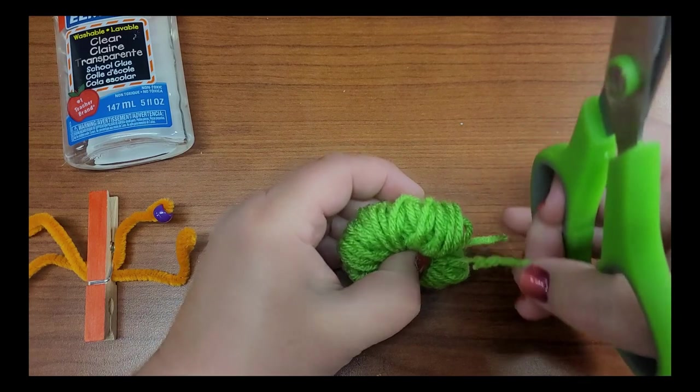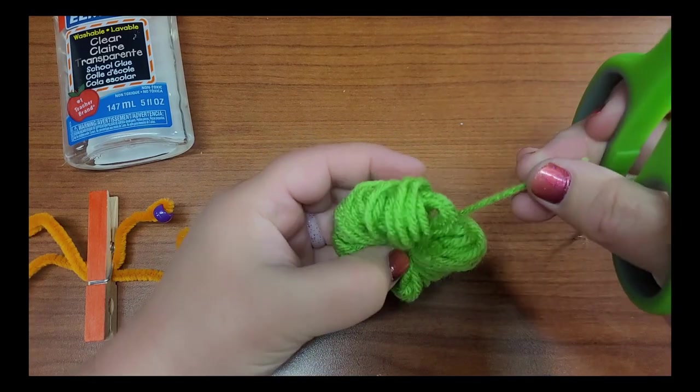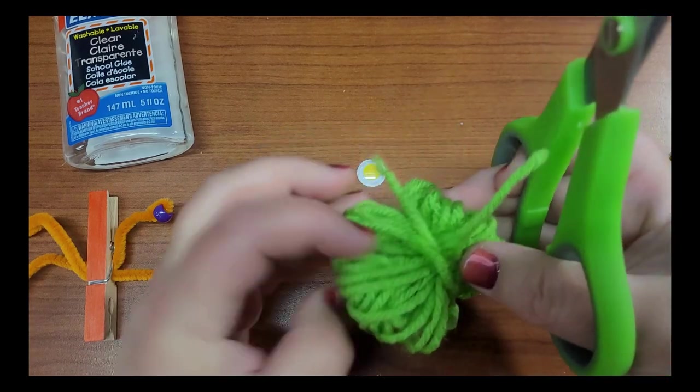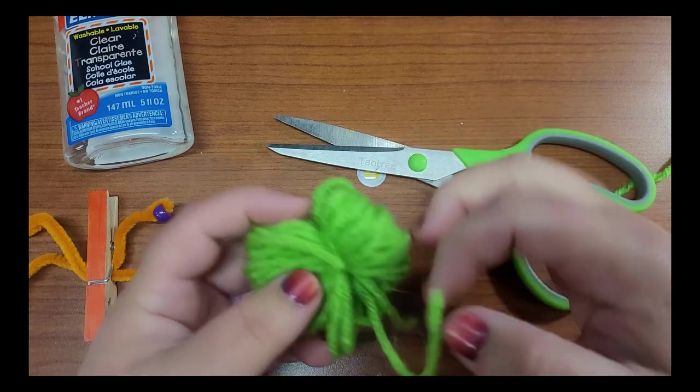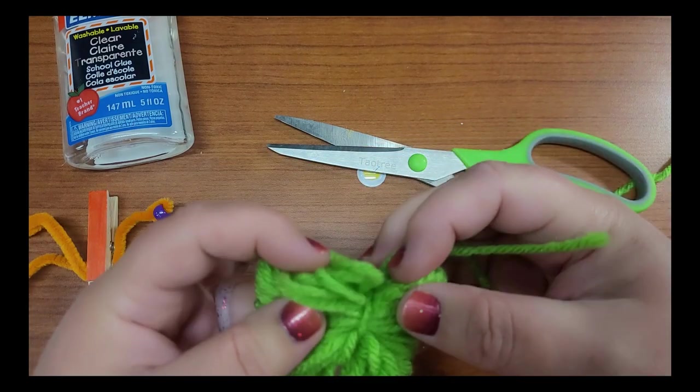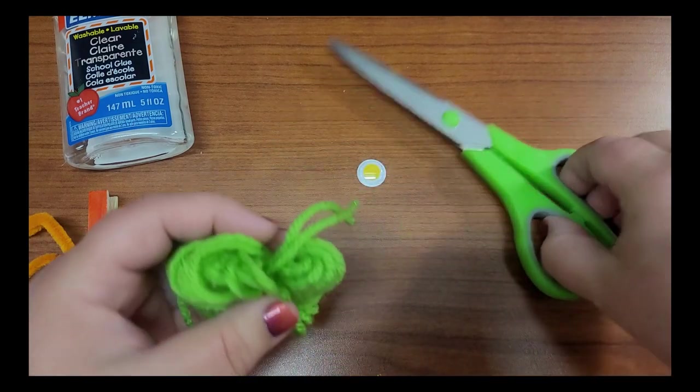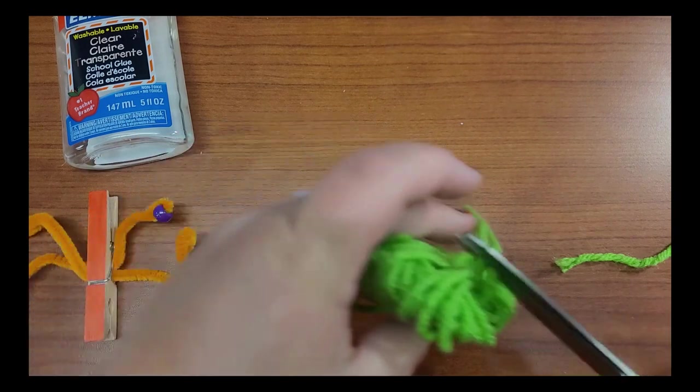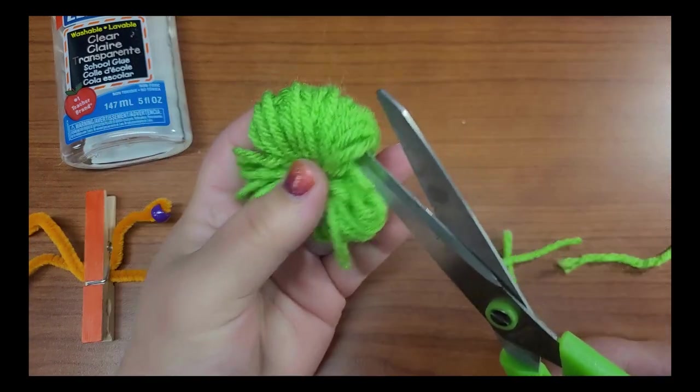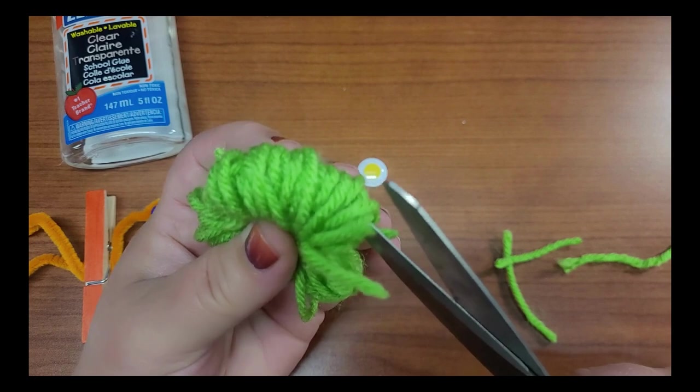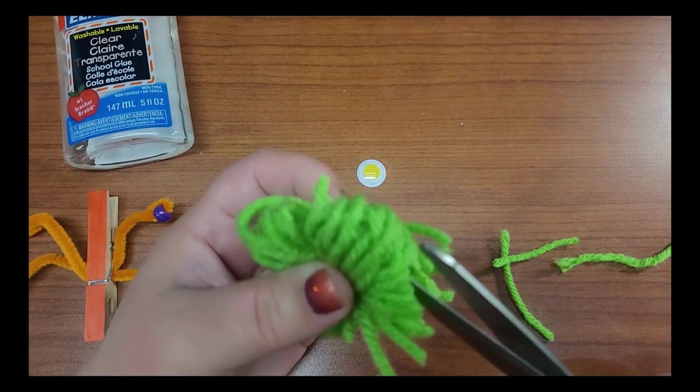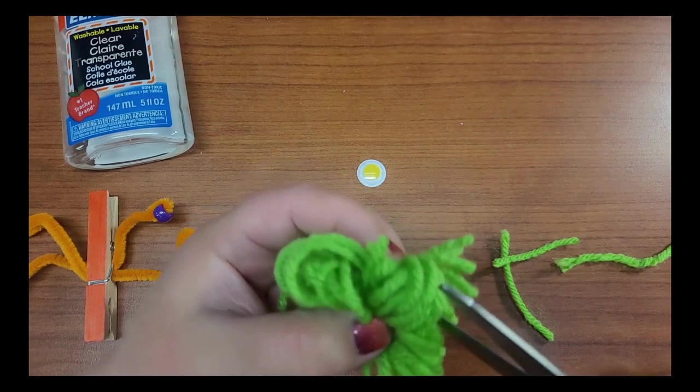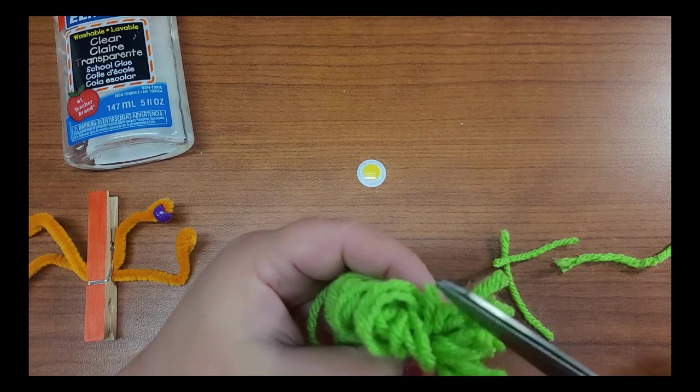And then I'm going to just kind of cut the ends to make my pom-pom. We did a teen craft a few months ago where we made yarn cacti out of pom-poms. So you can kind of go in and just cut the ends where the yarn is folded over.